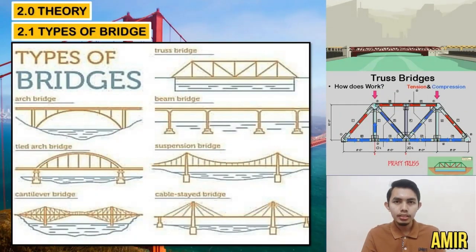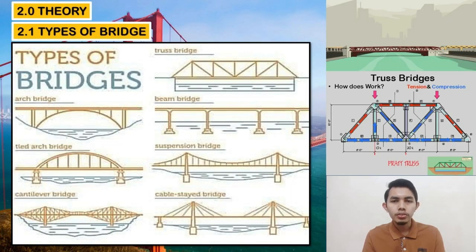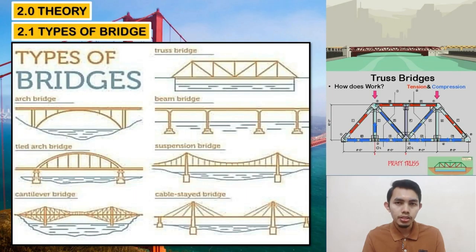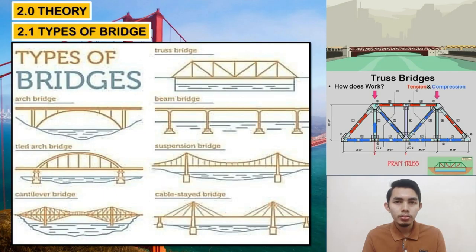I will tell you about the theory types of bridge. There are 7 types of bridge: truss bridge, arch bridge, beam bridge, tied arch bridge, suspension bridge, cantilever bridge, and cable-stay bridge. We chose truss bridge because of its structural function in which tension is used in the thrust part while compression is used in the column.